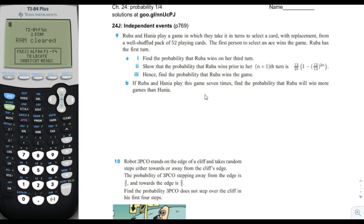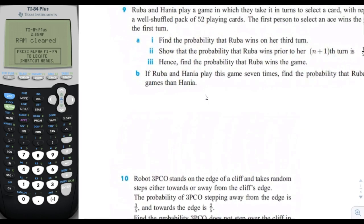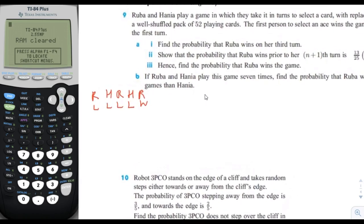So basically, Ruba does not select an ace on her first two turns, and neither does Hania. The turn order is: Ruba first, then Hania, then Ruba, then Hania, then Ruba takes her third turn and wins. So the sequence is lose, lose, lose, lose, then win. They are replacing the cards each time.